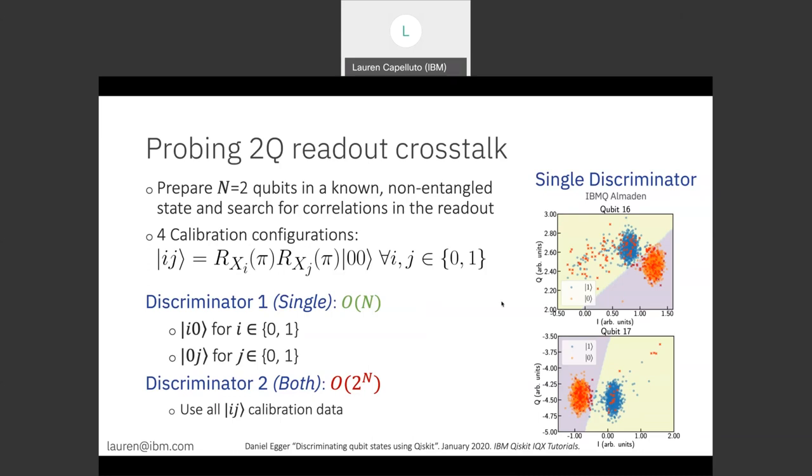We have the 00 state where they're both in the ground state, the 10 state, the 01 state, and finally the 11 state where both qubits have been set up in the excited state. And then immediately after we measure all four configurations separately.